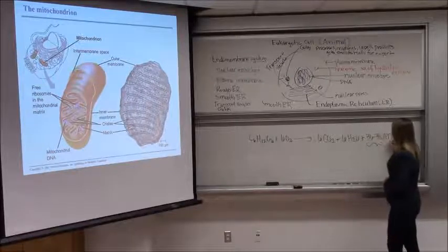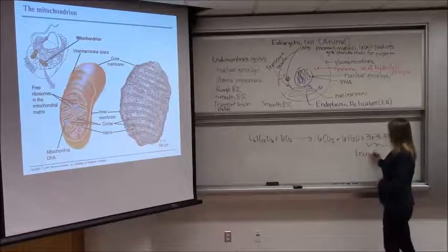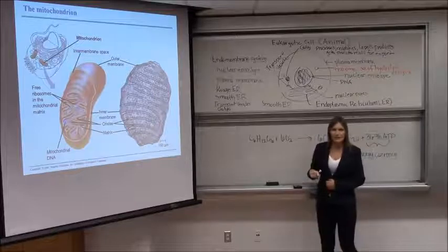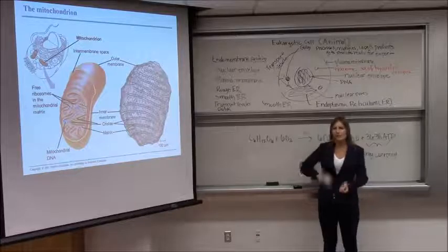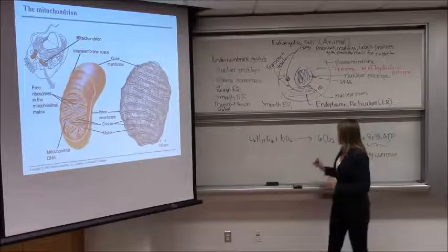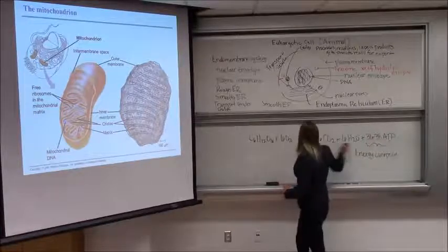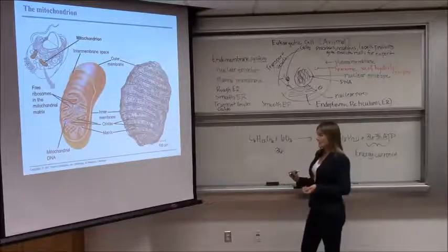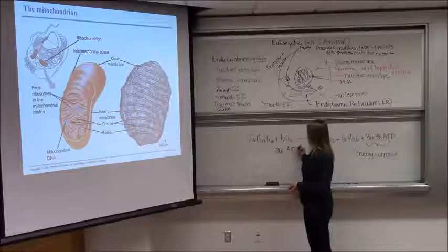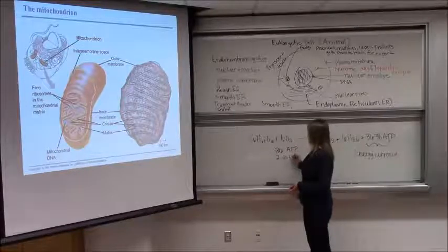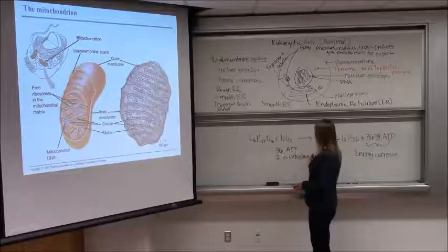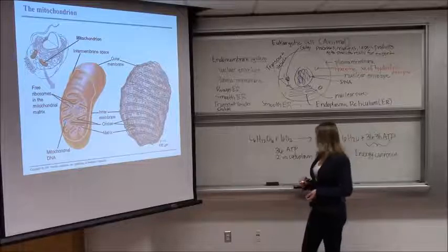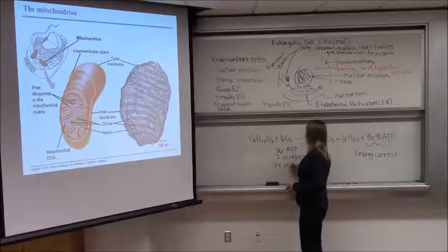Remember, that's the energy currency of the cell. Reactions that require energy, we have to pay for those reactions with ATP. We can't just feed glucose straight into the reaction. So ATP is very important. We make two of those. So of the 36, let's just go with 36 right now, not the range of 36 to 38. So of those 36 ATP, we're going to make two in the cytoplasm of the cell through a process called glycolysis.